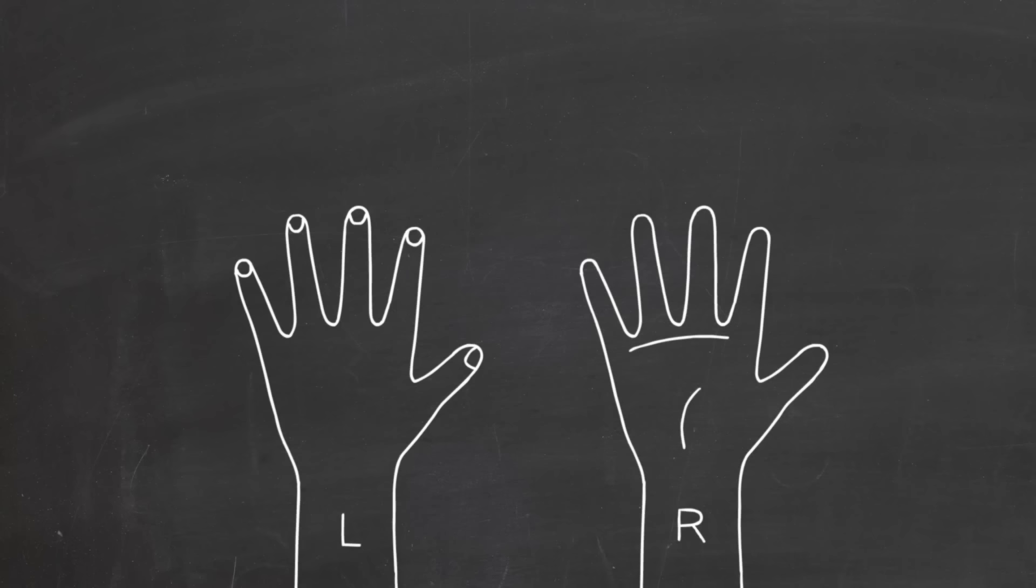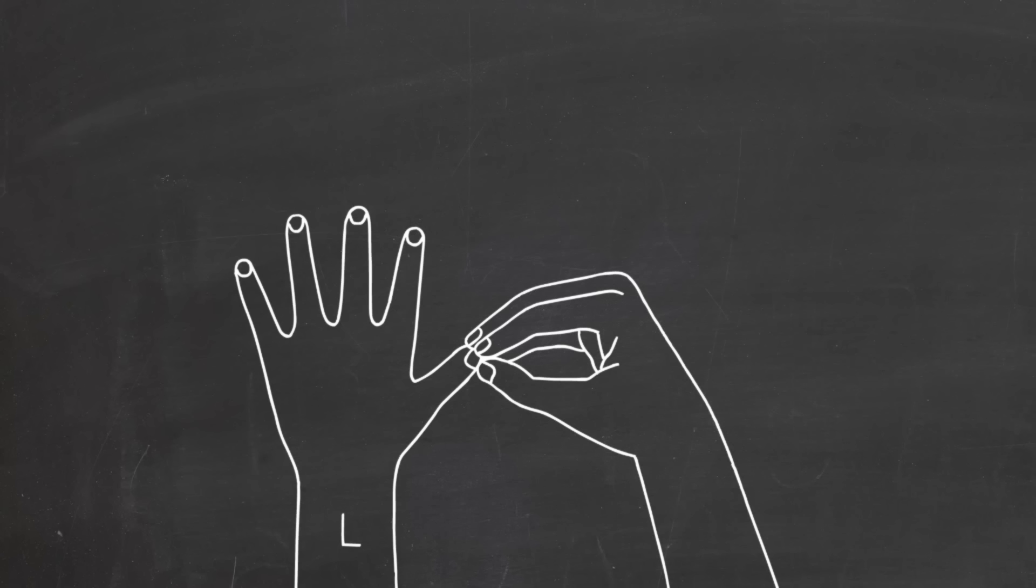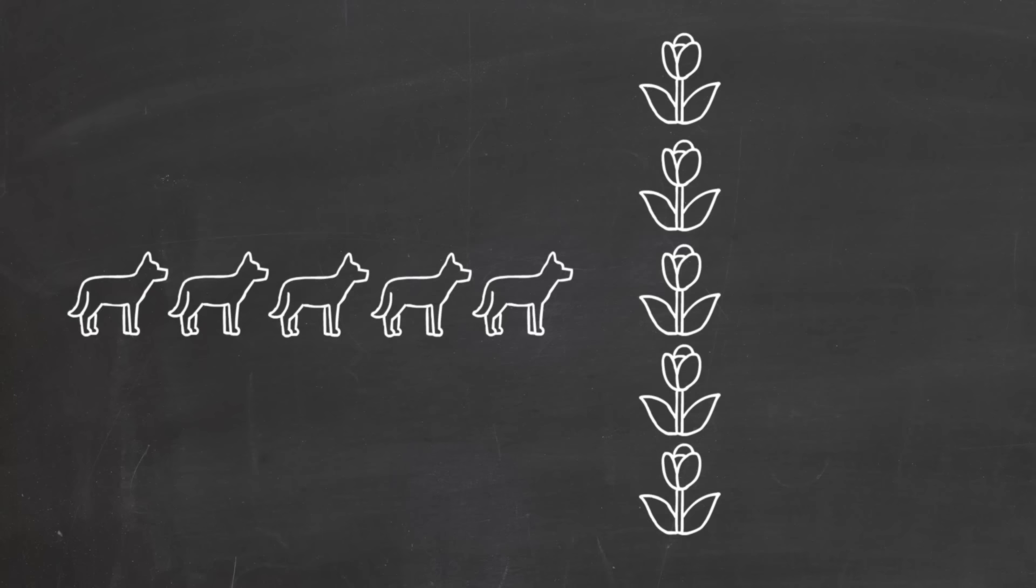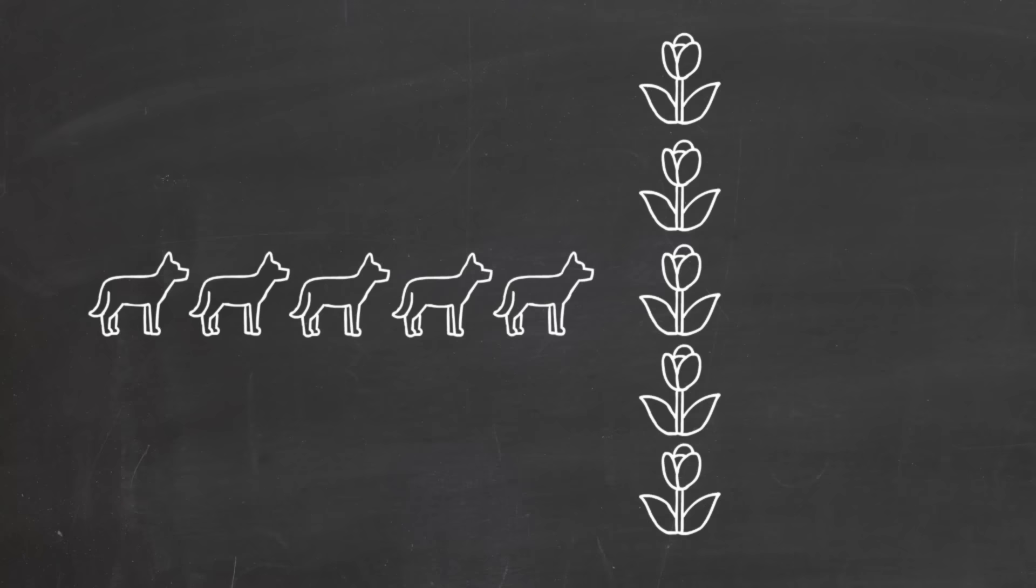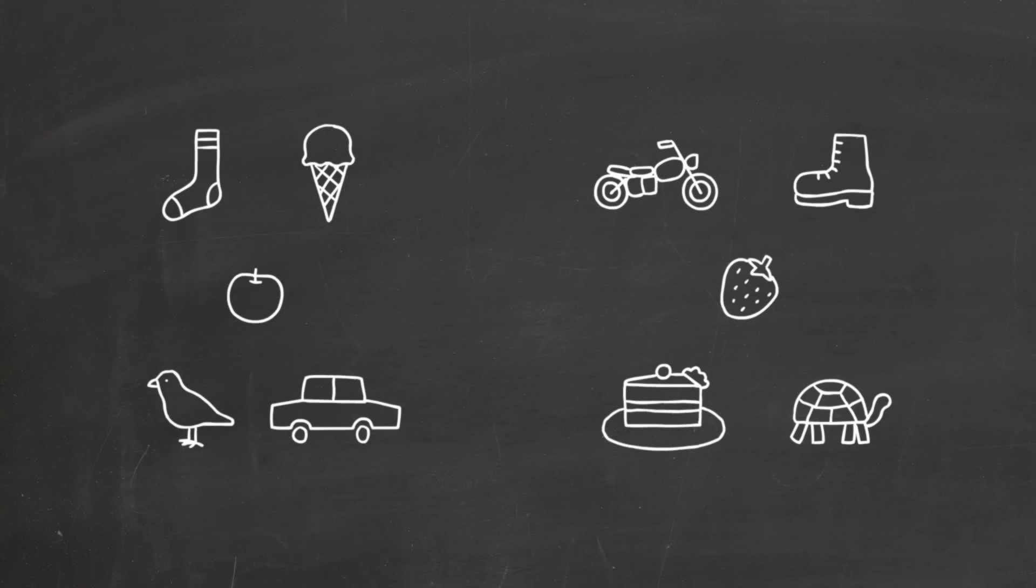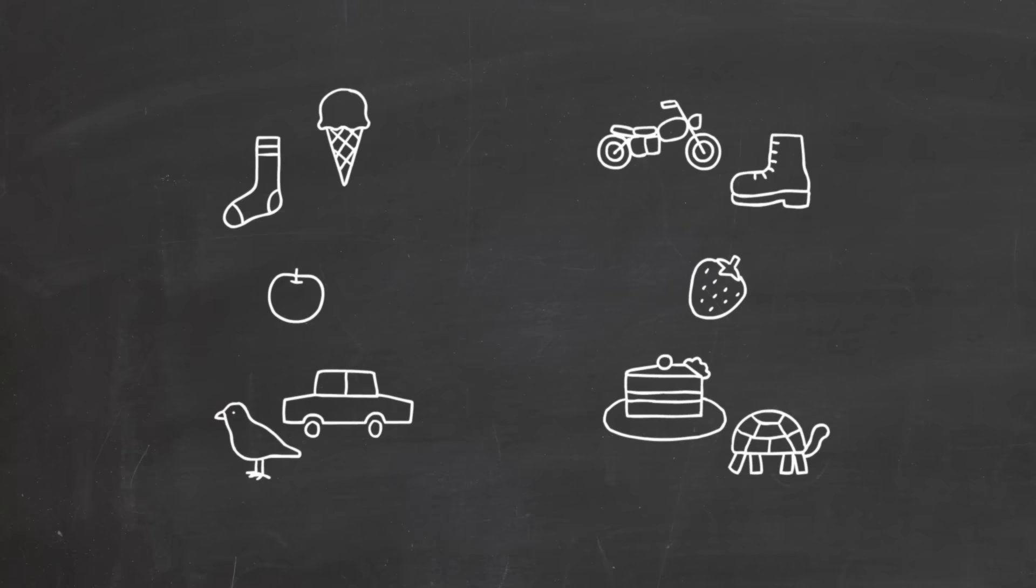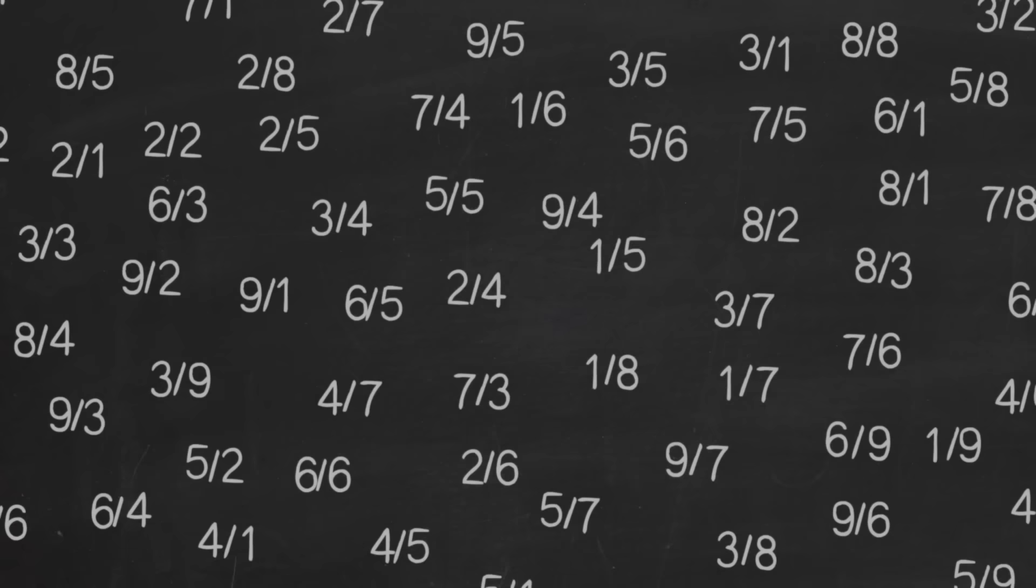But what still bothers us is our distress over the fact that the even numbers seem to be only part of the whole numbers. But does this convince you that I don't have the same number of fingers on my right hand as I do on my left? Of course not. It doesn't matter if you try to match the elements in some way and it doesn't work. That doesn't convince us of anything. If you can find one way in which the elements of two sets do match up, then we say those two sets have the same number of elements.